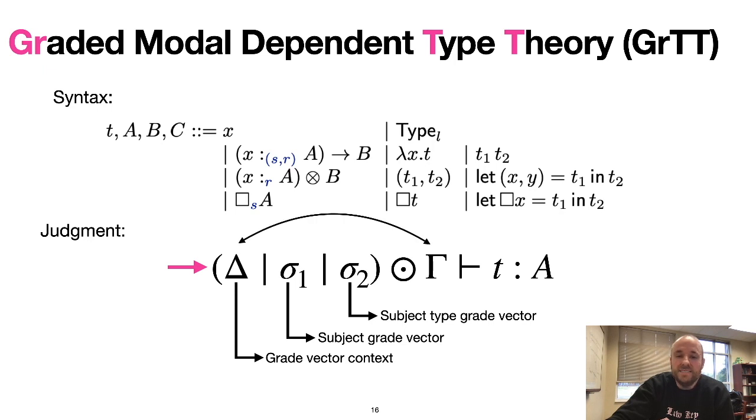Grade vectors are used to add grade information to the judgment. The grade vector context describes how the variables in gamma are used within gamma itself. The subject grade vector is used to describe the usage of the variables in gamma in the subject of the judgment. And the subject's type grade vector, sigma 2, describes how the variables in gamma are used in the subject's type a.